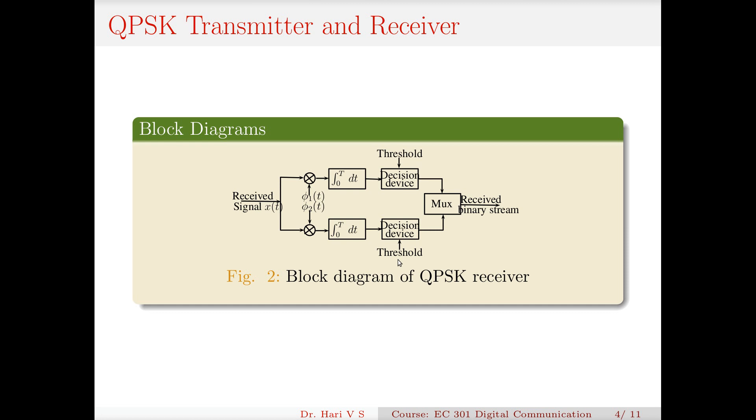They are multiplexed together because in the transmitter they are demultiplexed into even and odd indexed sequences. Here in the multiplexer they are again combined and this is the received binary stream.